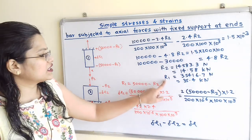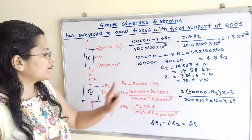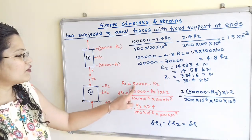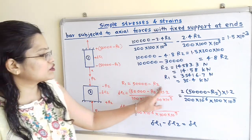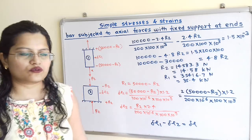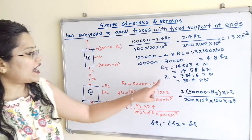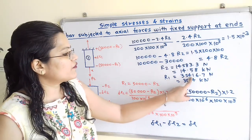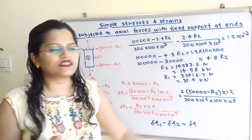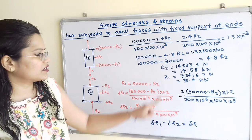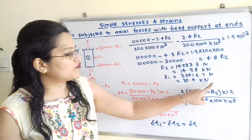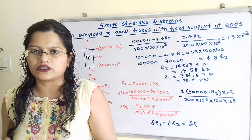Now, using the relation between R1 and R2: R1 equals 50,000 minus R2. Therefore, R1 equals 35,416.7 Newton, which is 35.4 kilonewton.